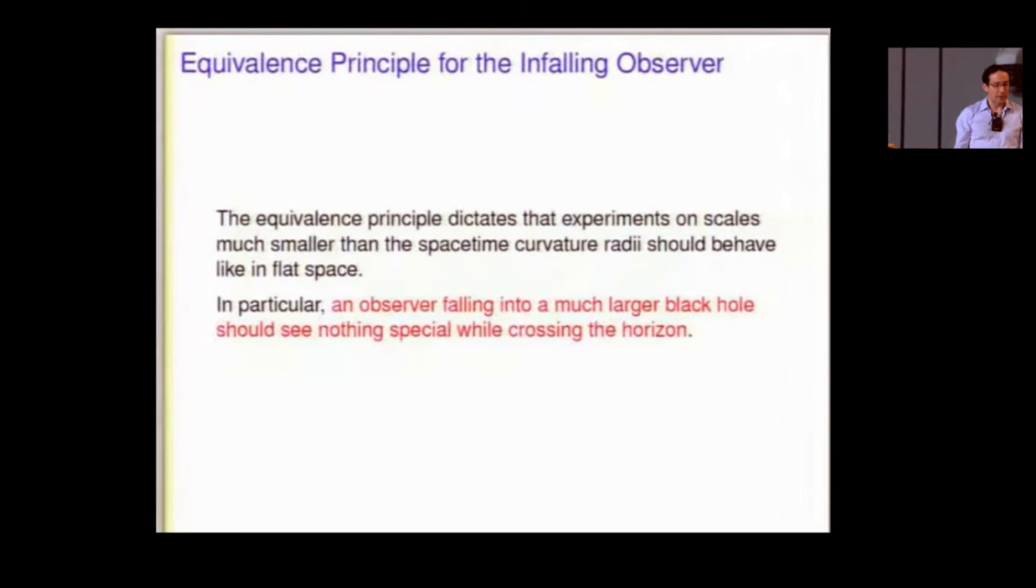To a relativist, things are a little more confusing, because the equivalence principle dictates that experiments on scales much shorter than the horizon experience nothing, especially that you should observe the same stuff that they would see in flat space at the time when an in-falling observer crosses the horizon. This could be a black hole that's a billion light years across, okay? So, you would have a billion years to live after you cross the horizon. It's completely, we could be crossing it right now, okay? And not know anything about it.